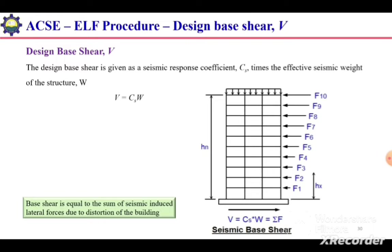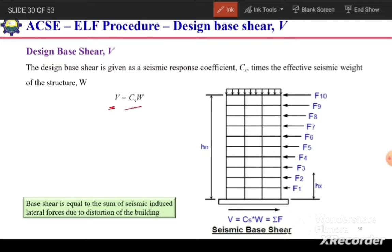First of all, design base shear. The design base shear is given as the seismic response coefficient times the effective seismic weight of the structure. So V, the seismic base shear, is equal to Cs times W. Regarding Cs and W, you can refer to the previous videos. Cs is the seismic response coefficient and W is the effective seismic weight.